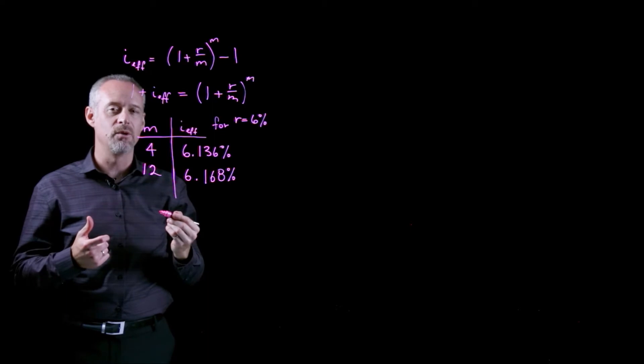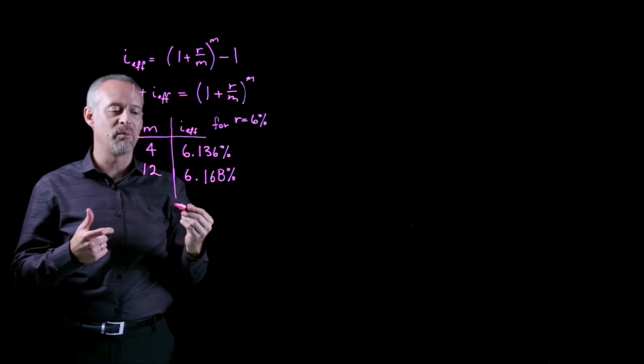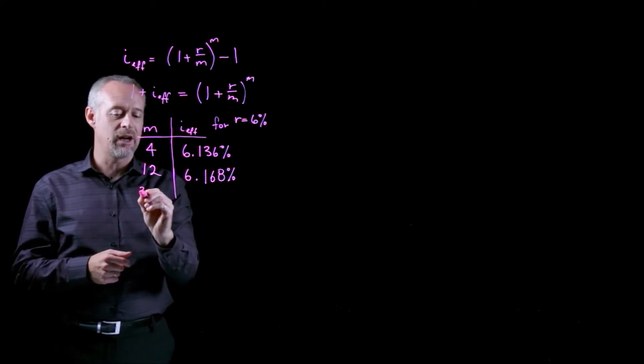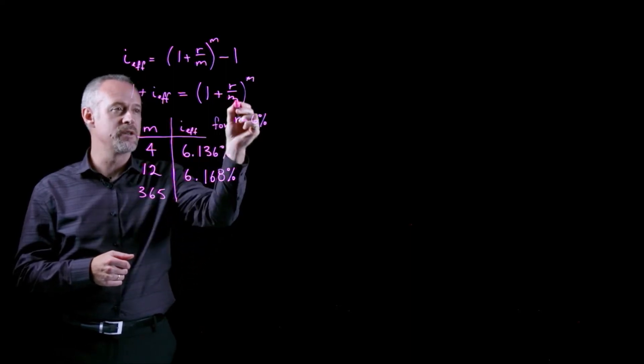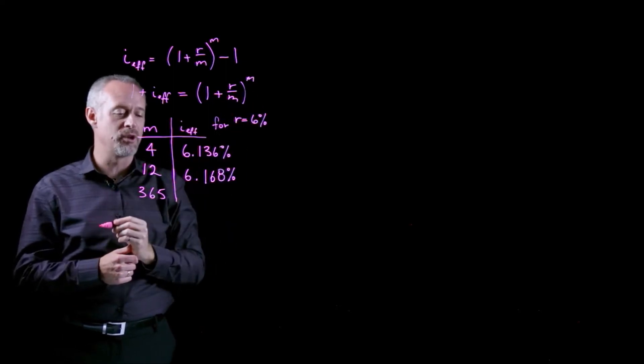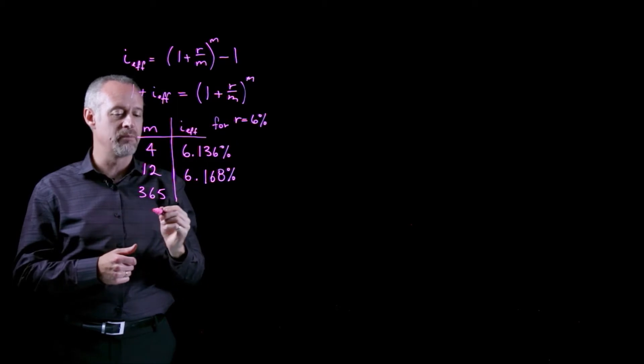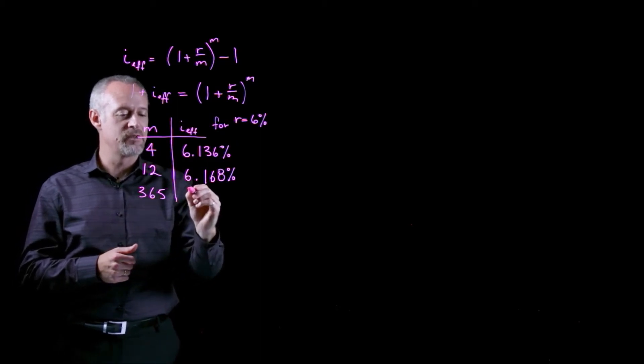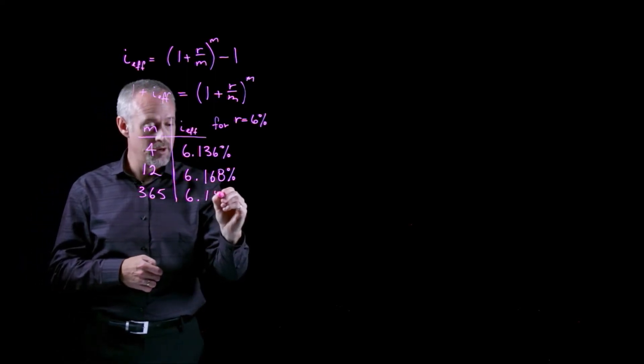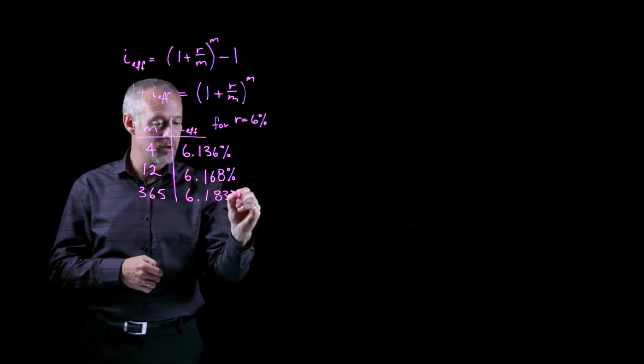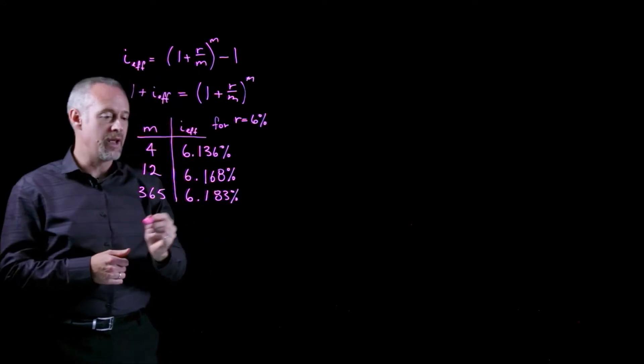If I go all the way to 6% compounded daily, I would have 365 compounding periods in my quoted nominal interest rate time, and that gives me an interest rate of 6.183%.